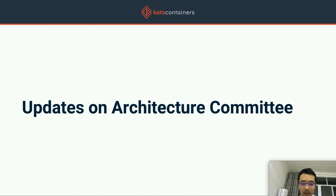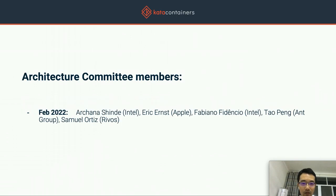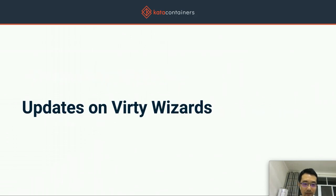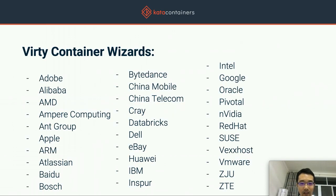Some updates on the Architecture Committee: we have gone through several rounds of elections in the past few years. The latest Architecture Committee members are Arjuna from Intel, Eric from Ampere, Fabiano also from Intel, Tao Peng myself from Ant Group, and Samuel from Riveros. We have seen developers from these companies contributing to the project. This is an expanding list of companies — currently a little more than 30 — and we expect to see more folks from different communities and companies come to contribute.